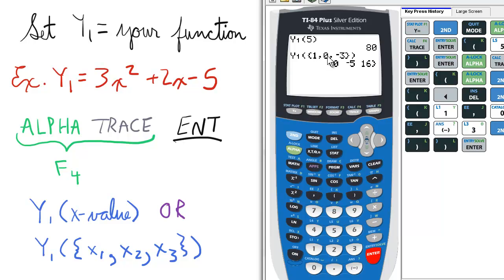F of 1 is 0, F of 0 is negative 5, and F of negative 3 is 16.